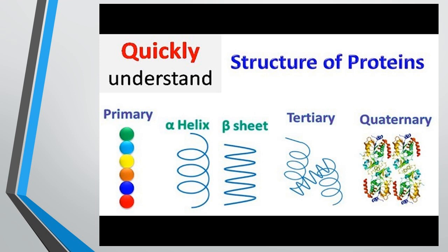The primary structure is the sequence of amino acids. The secondary structure takes the form of alpha helix and beta sheet. The tertiary structure is the overall three-dimensional shape of the polypeptide chain. The quaternary structure is the active form consisting of a complex of two or more polypeptide units that associate to form a functional protein, as well as protein-to-protein contacts that occur in multi-enzyme complexes.